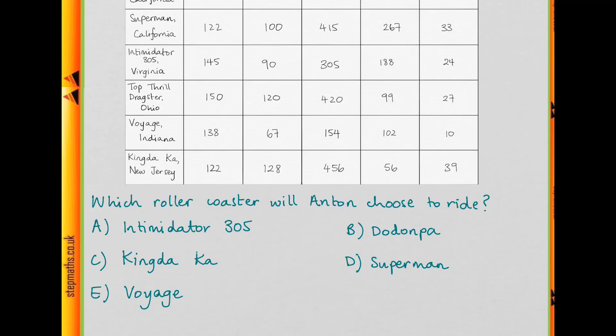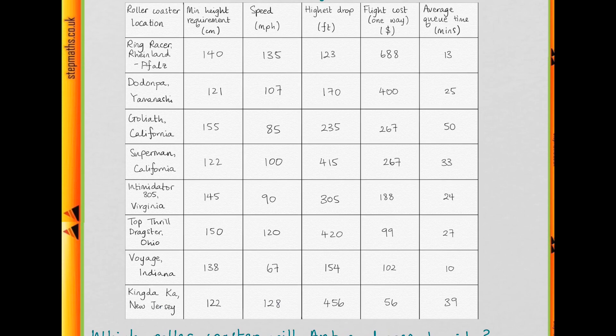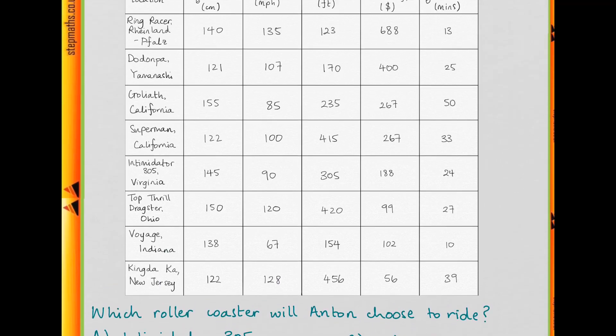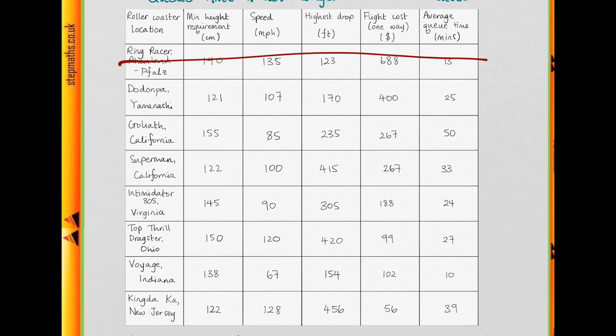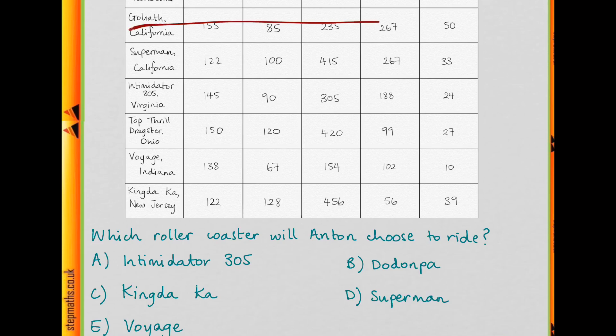We want to eliminate roller coasters. They've given us 5 choices and there are 8 roller coasters, so immediately we can get rid of 3. Ring Racer is not there, neither is Goliath or Superman.